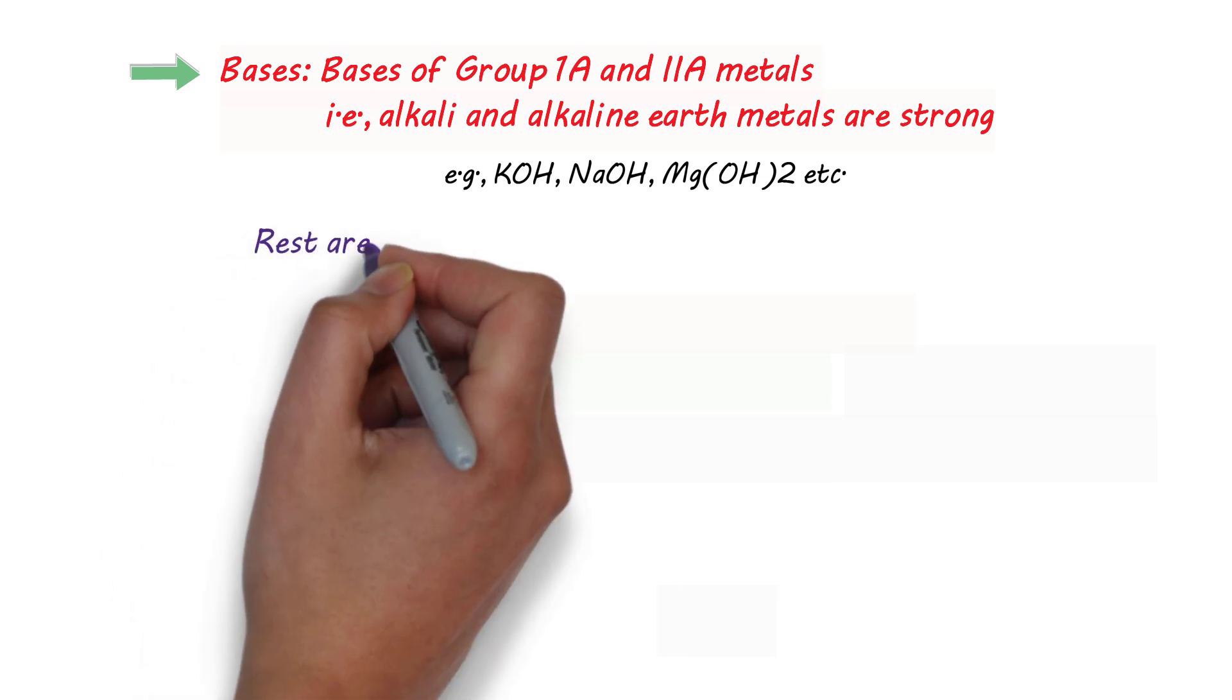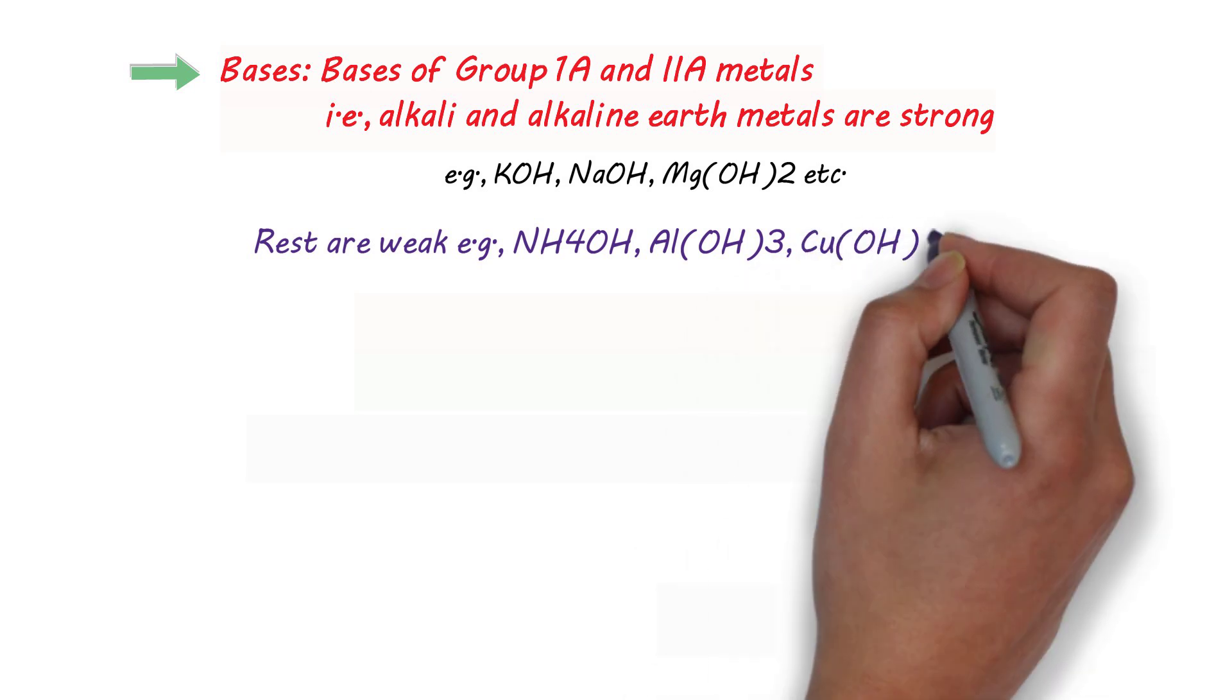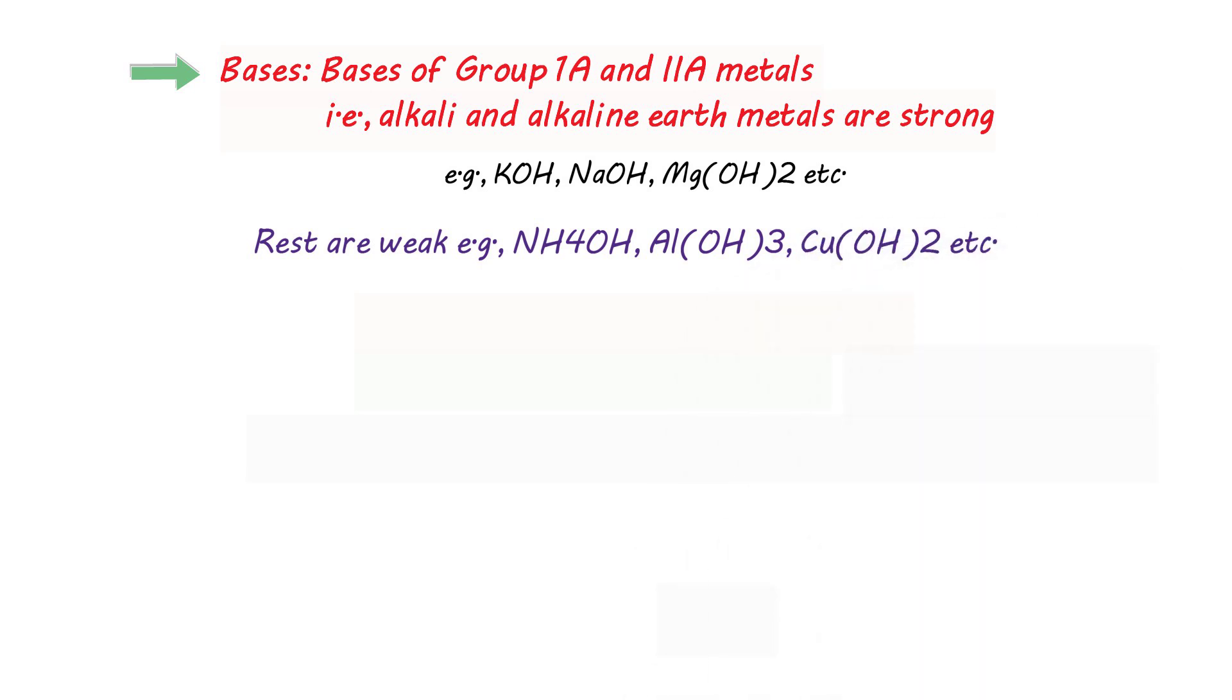However, the rest of the bases will be weak. For example, ammonium hydroxide, aluminum hydroxide, copper hydroxide. As they are not the bases of alkali and alkaline earth metals, so they are weak bases or weak electrolytes.